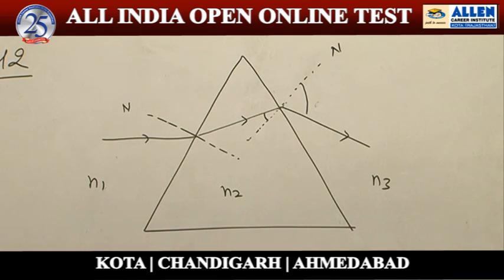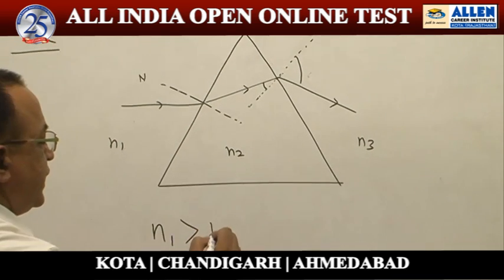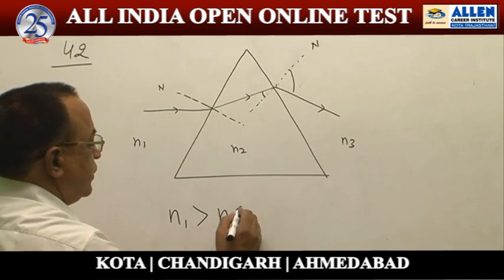So we can say N3 is minimum and N1 is maximum. The sequence is N1 is greater than N2, and N2 is greater than N3.